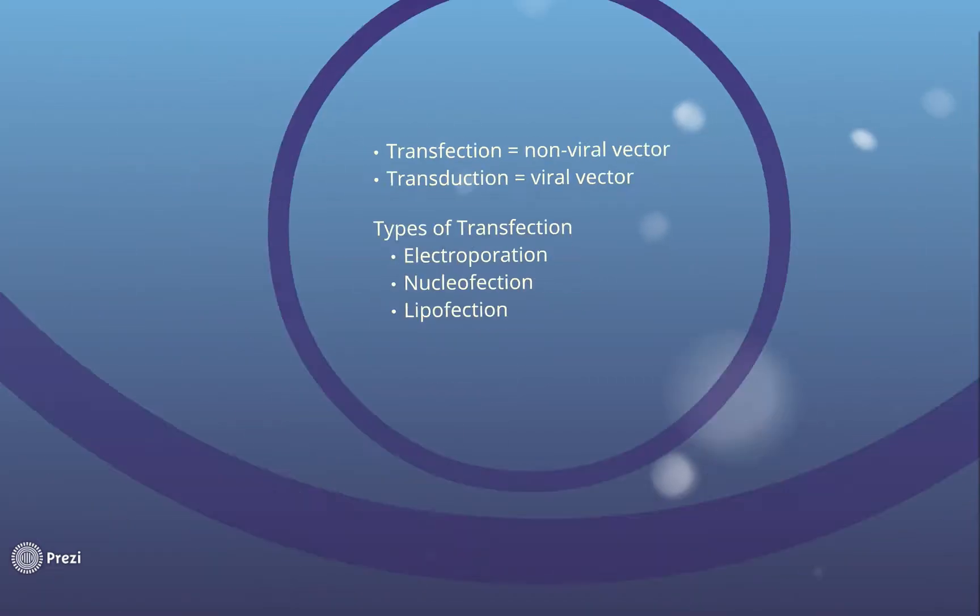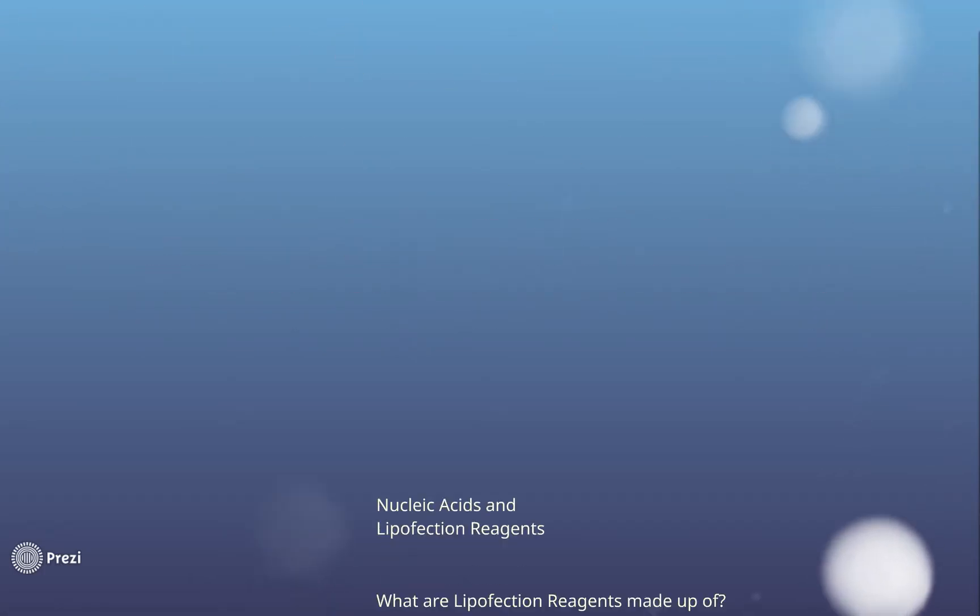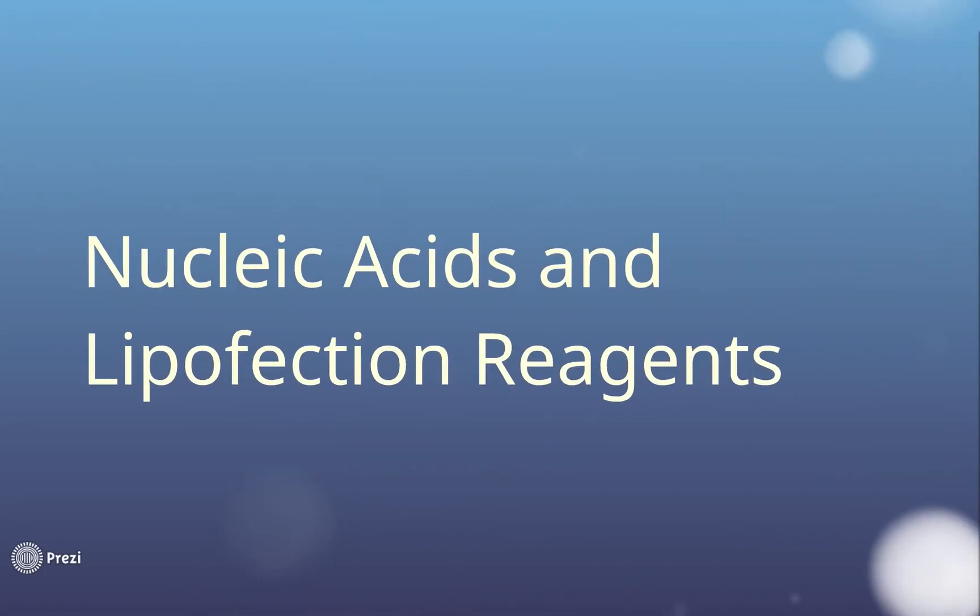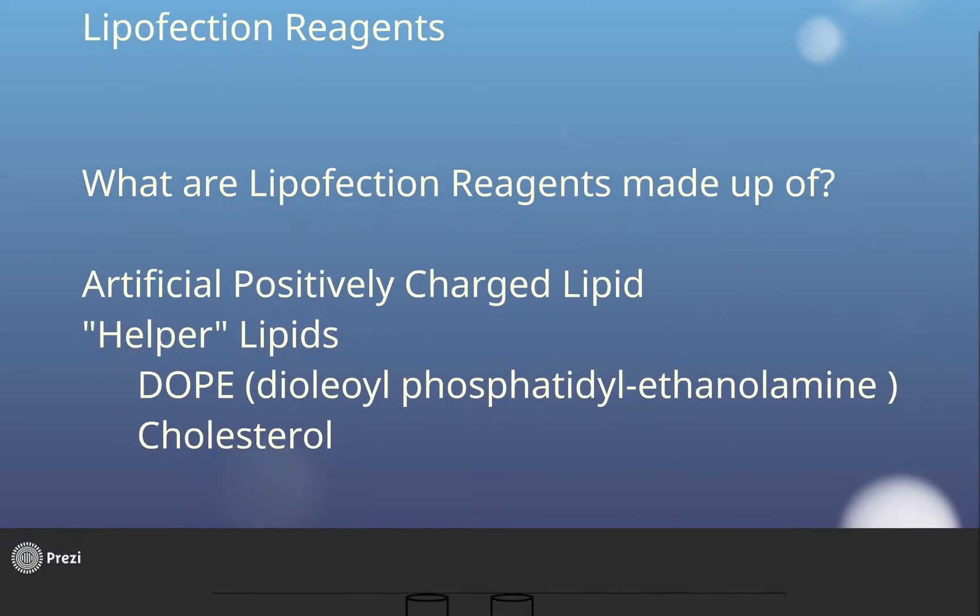Now how does lipofection work? You start with the nucleic acids that you wish to introduce to your cell and lipofection reagents. Lipofection reagents consist of artificial positively charged lipids that are mixed with helper lipids such as cholesterol or DOPE that aid to facilitate fusion within target cells.